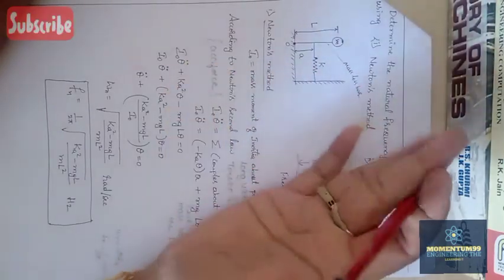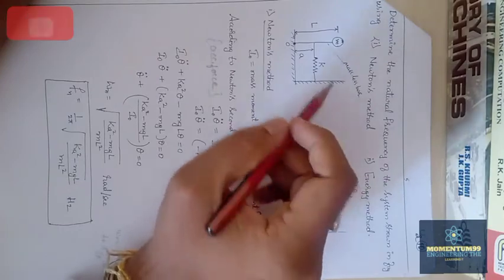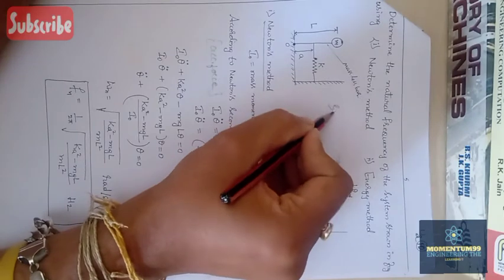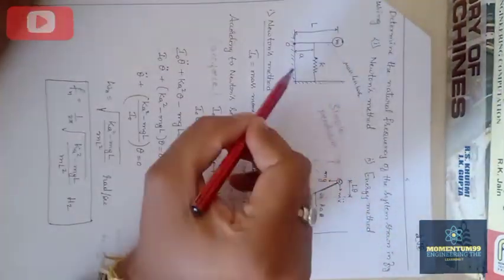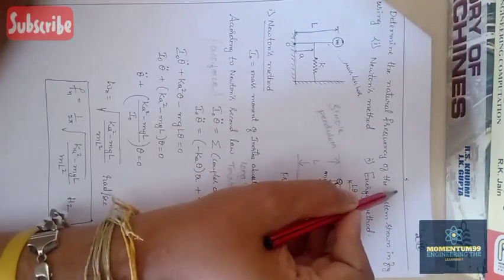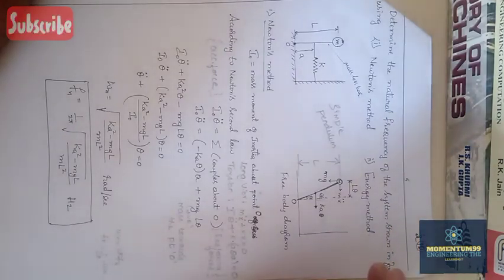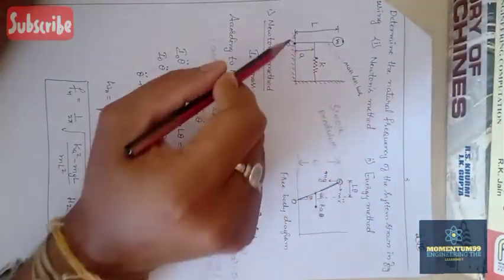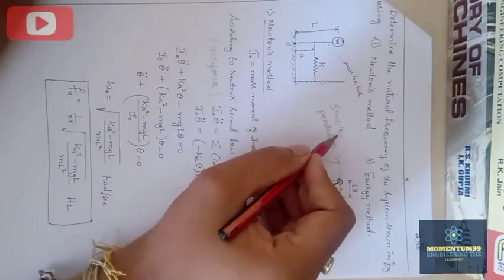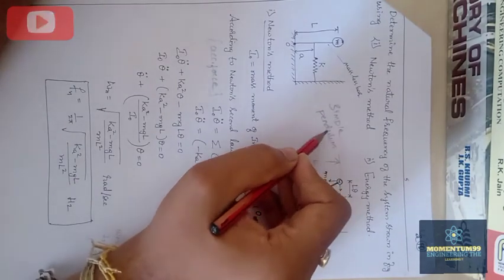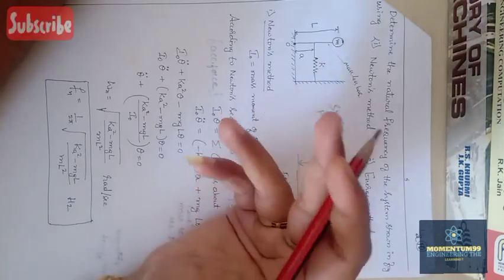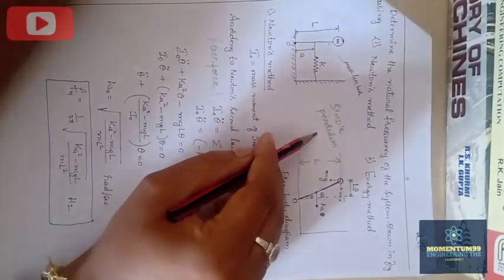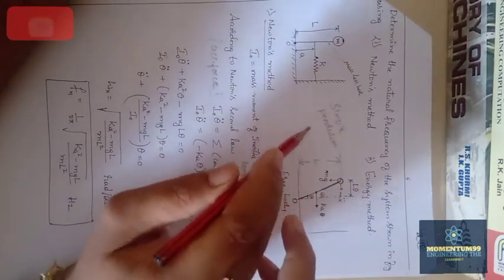This is a different problem from what we have seen previously — it is related to the simple pendulum. Any rigid body which can have angular displacement is a simple pendulum. If a body covers a small angular displacement with respect to a fixed point O, it is called a simple pendulum, and it is under the action of gravity. Whenever a rigid body undergoes a small angular displacement under the influence of gravity, it is called a simple pendulum.